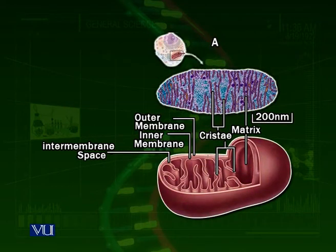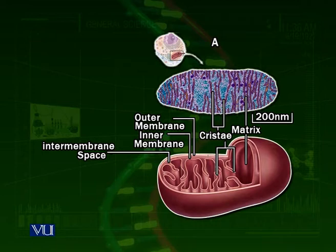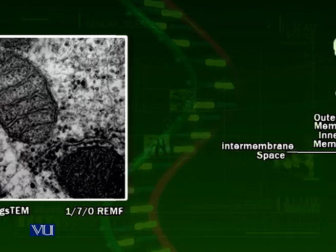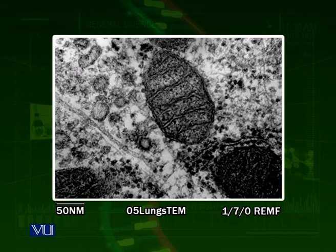Looking at the diagram of a mitochondrion — mitochondria is the plural, mitochondrion is the singular — you can see the outer membrane, which is less folded and straight, and the inner membrane, which is highly folded with cristae in the matrix inside. On the left, you can see an electron microscope image showing a mitochondria in grayish color.